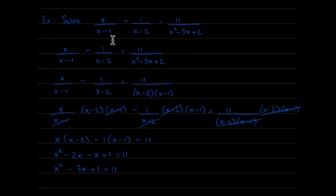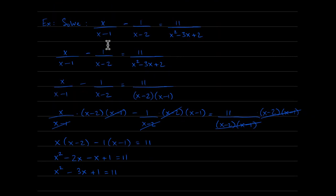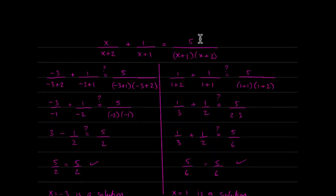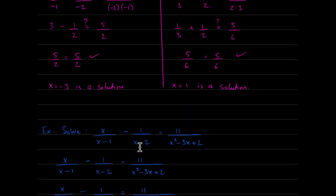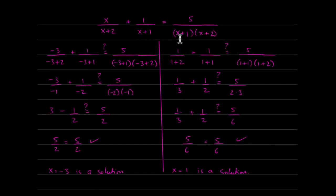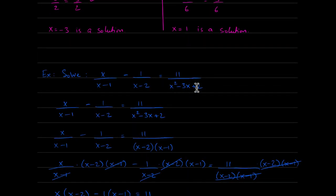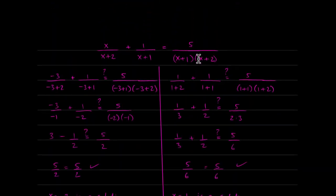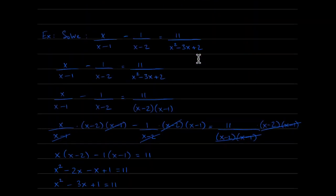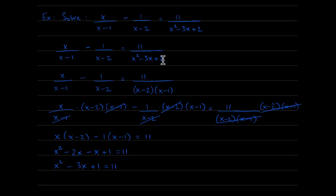Next example: compare the denominators here with the previous example. In the previous one all denominators were linear or already factored quadratic. Here we have a quadratic denominator that hasn't been factored yet: x squared minus 3x plus 2. Factoring using the AC method gives x minus 2 times x minus 1, and now we're back to solving exactly the same type of problem.